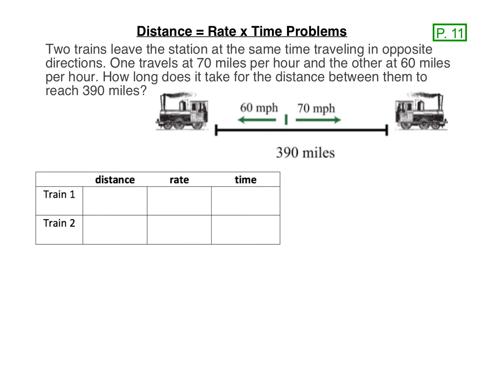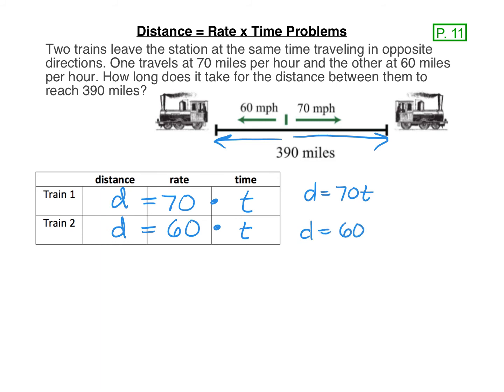We do not know the distance of either, but I know that one train is going this way at 70 miles per hour, and one train is going the other way at 60 miles per hour. Let's fill in the table with what we know. Train one is the train traveling at 70 miles per hour, so the rate is 70, and the time — let's just call the time T. For train number two, we know that it's traveling at 60 miles per hour, and it's going to travel the same amount of time. Train one's distance is going to be 70 times T, and train two's distance is going to be 60 times T.